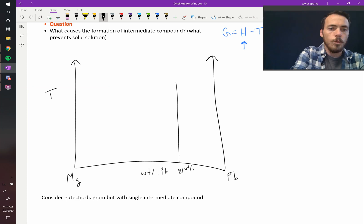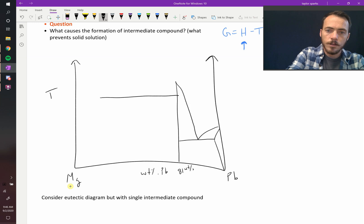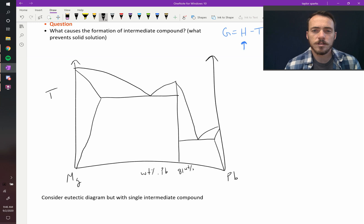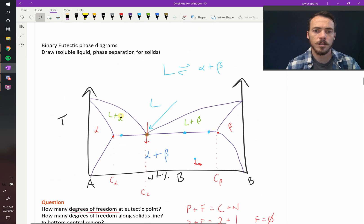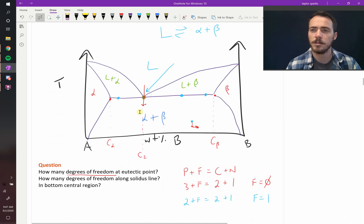And it looks like two binary eutectic diagrams back to back. What do I mean? Well, on one side you've got a line like this. On this side you've got a line like that. So you've got one eutectic right here, recognize that eutectic. And then over here you've got another one that looks something like this.